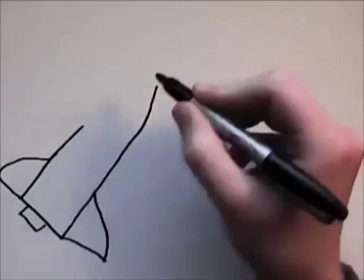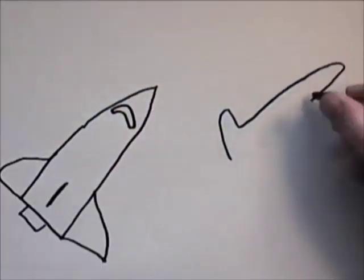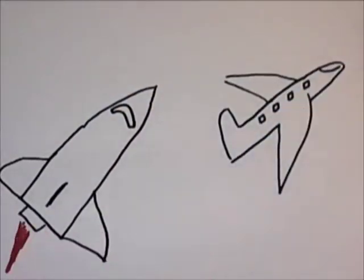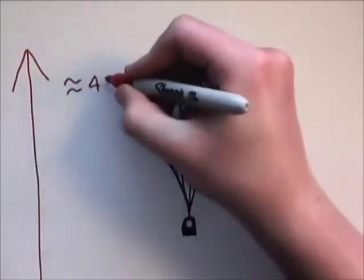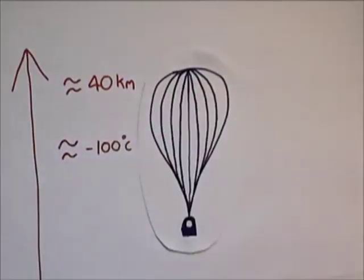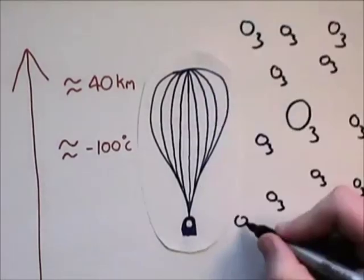This makes polymers ideal materials to use in aviation and aerospace engineering. To show this, let's first look at weather balloons. Weather balloons rise to about 40km high and experience temperatures as low as minus 100 degrees. As they reach their maximum height, they also enter areas of the atmosphere with much higher concentrations of ozone.